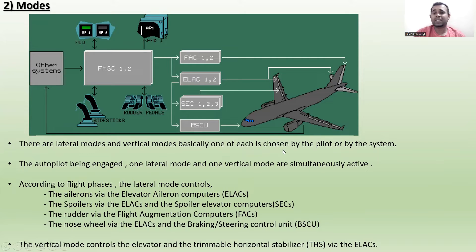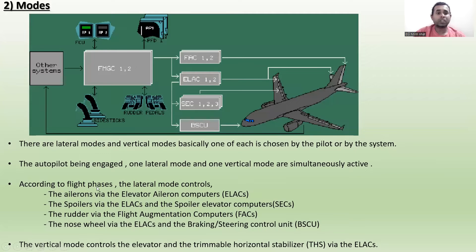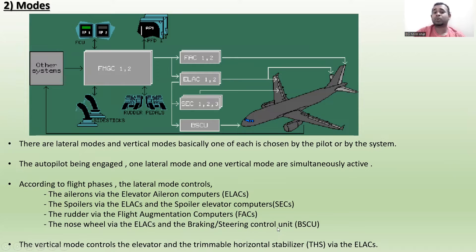There are lateral modes and vertical modes. Basically one of each is chosen by the pilot or by the system. When the autopilot is engaged, one lateral mode and one vertical mode are simultaneously active. According to the flight phase, the lateral mode controls the ailerons via the Elevator Aileron Computer ELAC, the spoilers via the ELAC and Spoiler Elevator Computer SEC, the rudder via the Flight Augmentation Computers, and the nose wheel via the ELAC and Braking Steering Control.